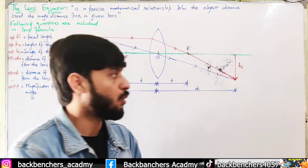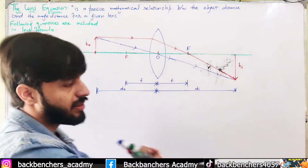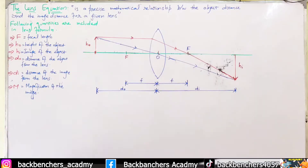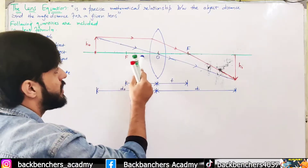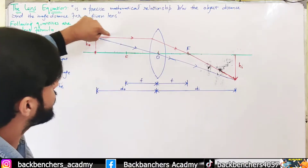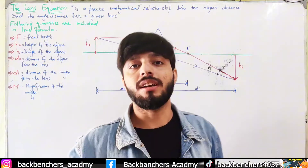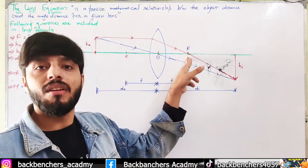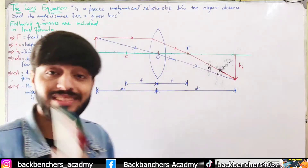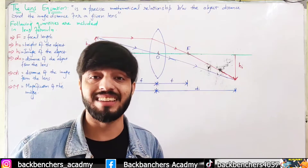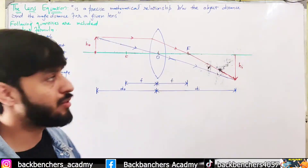Let's see how this ray diagram works, and then we will move towards the equation. As I told you in my previous lecture, any light ray that is parallel to the principal axis will always converge at a point which we call the principal focus. No matter how many light rays are coming — if they are parallel to the principal axis, they always converge at point F, which we call the principal focus.